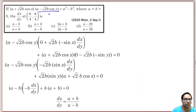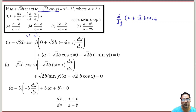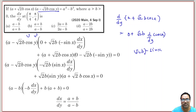For example, if we take the first function as u, then we compute d/dy of (a + √2b·cos x). Since a is constant, this is 0 + √2b·(-sin x)·(dx/dy). This is the u′ part, which is v·u′.